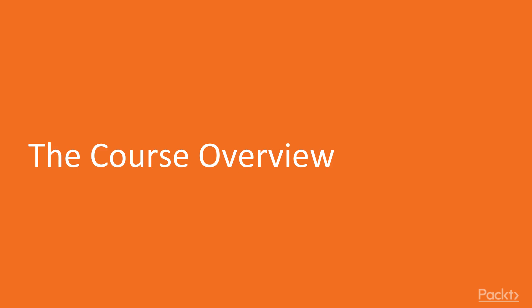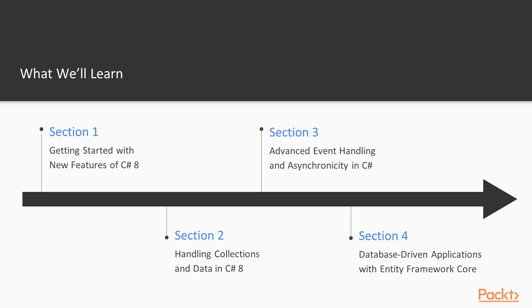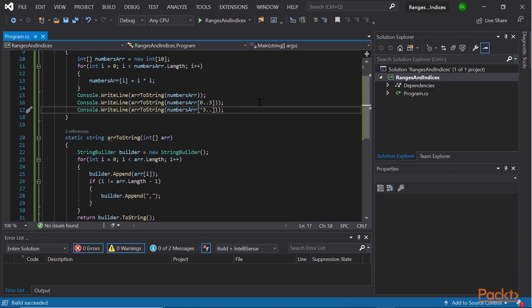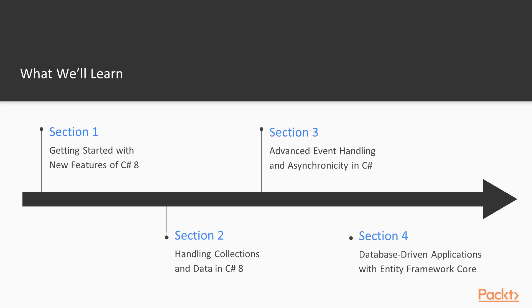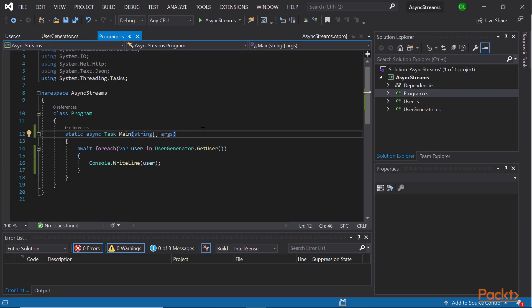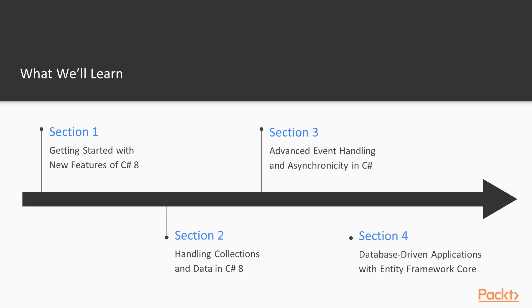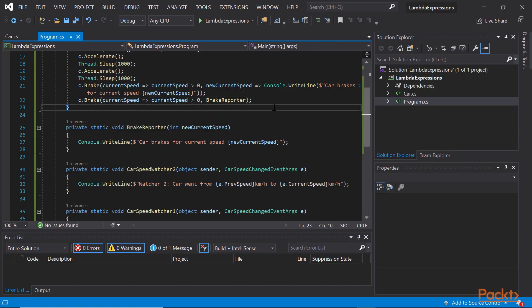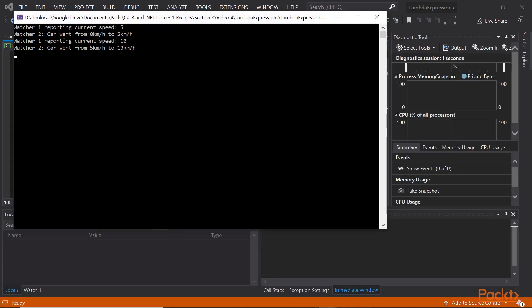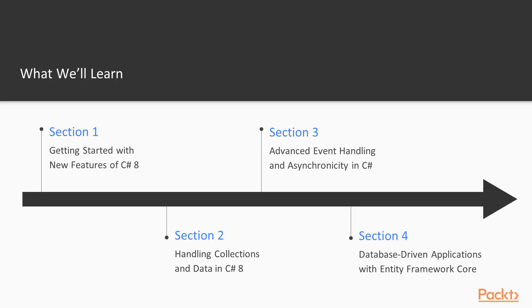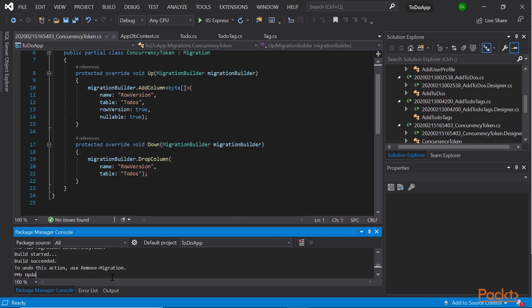In this video I will present you the course material on everything you need to know to prepare for future videos. We will begin by studying the latest features in C-Sharp 8. Moving on, we will apply the new features in Handling, Collections and Data. That will allow us to move forward with some of the most advanced C-Sharp features like Event Handling, Lambda Expressions and Multi-Threading. After that we will build a database driven application using the ORM of choice for .NET Apps, Entity Framework Core.